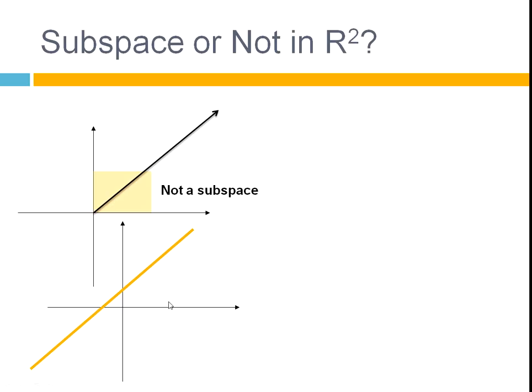What about this? This line goes on infinitely. So, any two vectors on this line, we add those two, you're going to still be on the line. Because the line goes on infinitely.